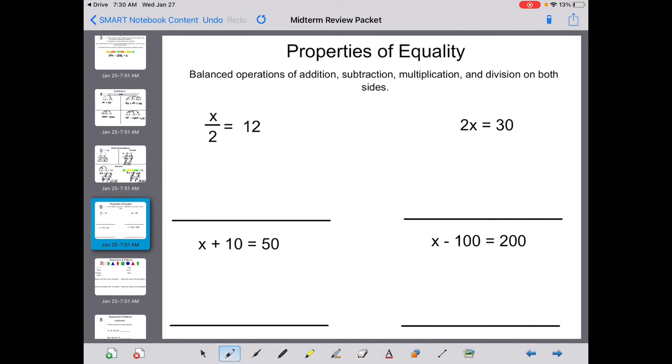There's going to be some multiple choice that give you an equation and they ask you which property of equality you would have to use. Well, I see x divided by 2, so I'm going to multiply by 2 on both sides. 2s are going to cancel, and x would equal 24. Now, it's not going to ask you to solve. It's going to ask you which property of equality we're using. Since you multiplied on both sides, that's the multiplication property of equality.